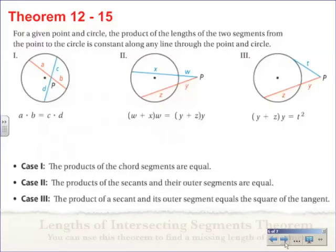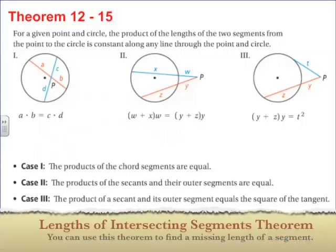And now our last theorem here, 12-15. For a given point and circle, the product of the lengths of the two segments from the point to the circle is constant along any line through the point and the circle.